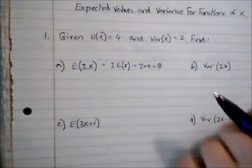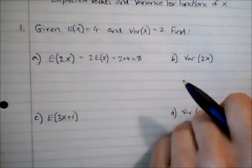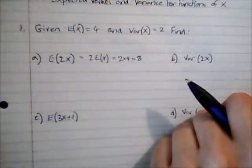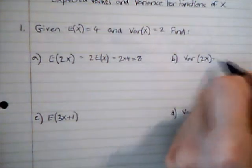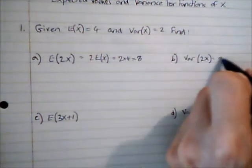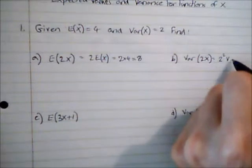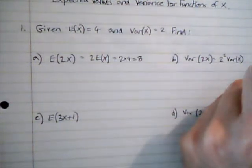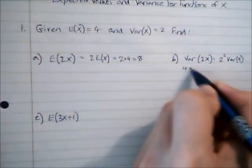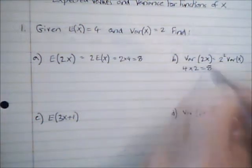When we consider Var(2X), it's slightly different. We need to remember that variance is a squared measure, so what actually happens here is the coefficient of X squared multiplied by the variance of X. So this is 2² times Var(X), which is 4 multiplied by 2, giving us a variance of 8.